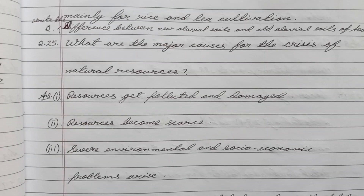Question number twenty-five: What are the major causes for the crisis of natural resources? Answer: Point one, resources get polluted and damaged; point two, resources become scarce; point three, severe environmental and socio-economic problems arise.